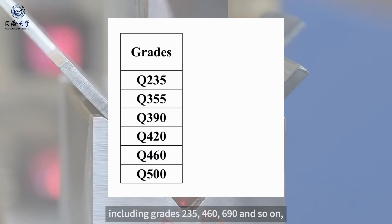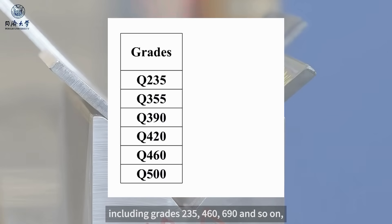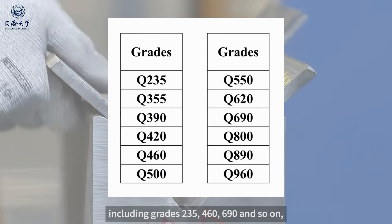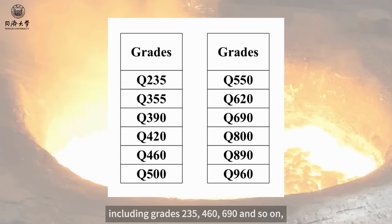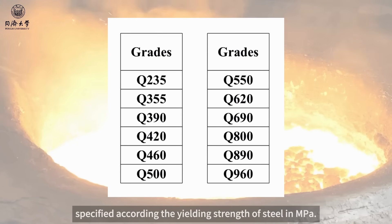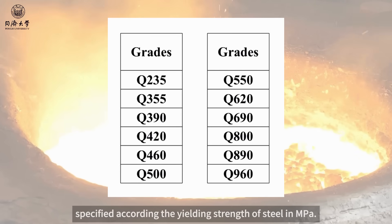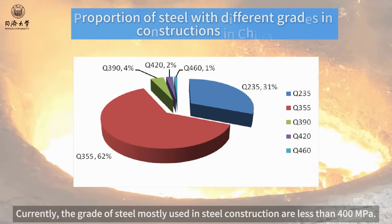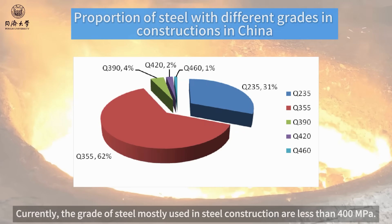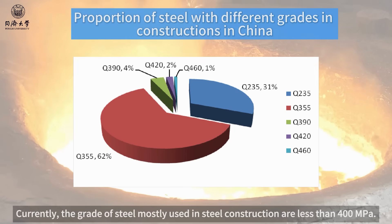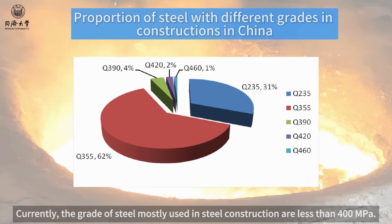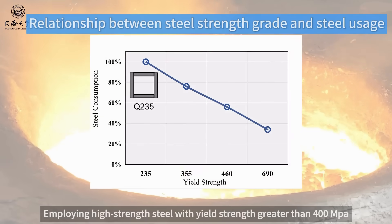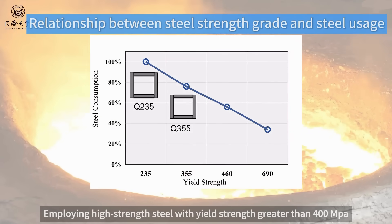Steel grades include 235, 460, 690, and so on, specified according to the yielding strength of steel in megapascal. Currently, the grades of steel mostly used in steel construction are less than 400 megapascal. Employing high-strength steel with yield strength greater than 400 megapascal can reduce the cross-sectional size of steel members.